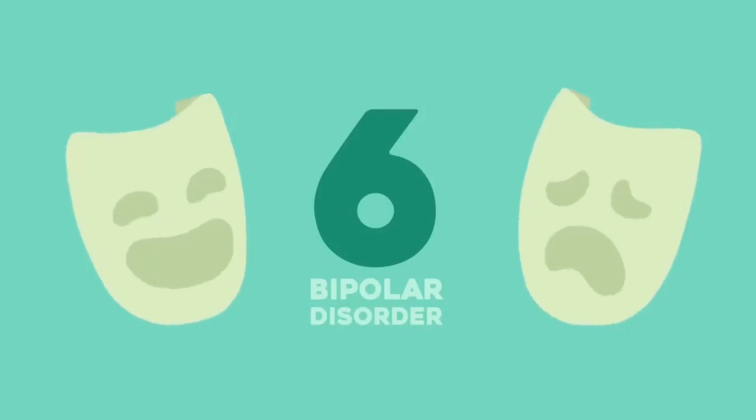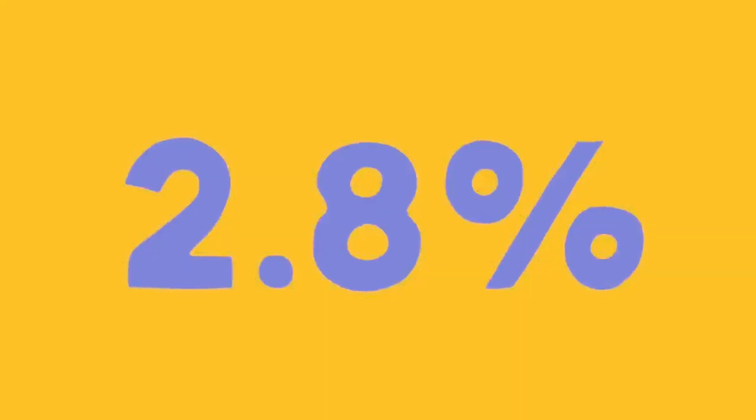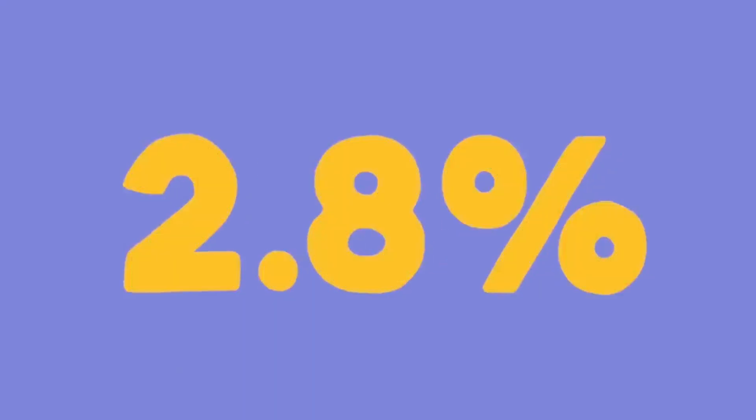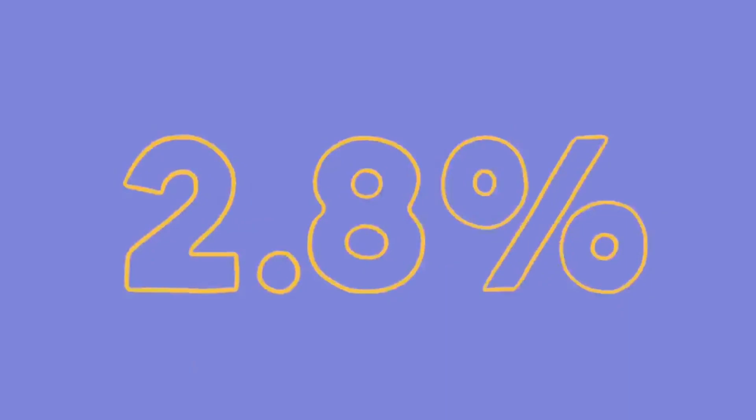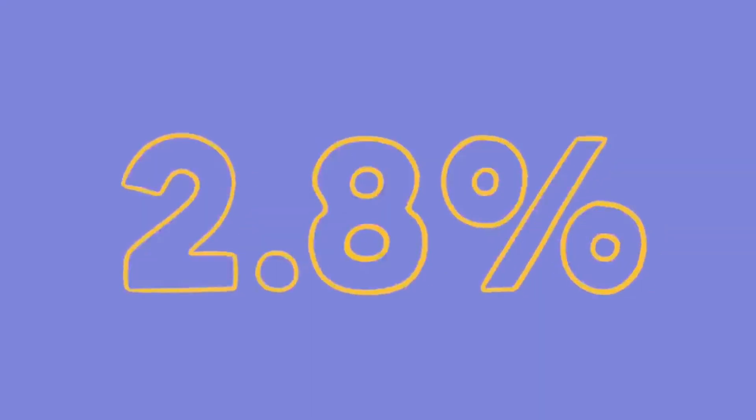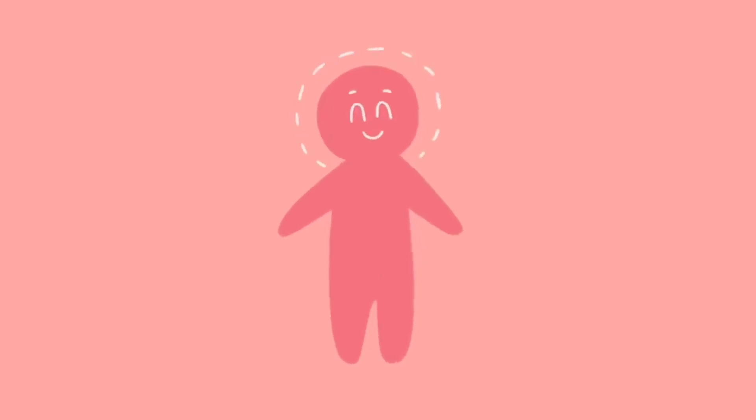6. Bipolar Disorder. An estimated 2.8% of the U.S. population that sought mental health treatment was diagnosed with some form of bipolar disorder in 2018. This number may be low, as many individuals who suffer from a mental health disorder do not seek treatment. Bipolar disorder means a lot more than just really bad mood swings. People diagnosed with it cannot completely control these mood swings, which range from manic episodes — feeling super happy or invincible, doing spontaneous things, grandiosity and racing thoughts — to extreme bouts of depression and sometimes hypomania in between. A variety of medications and counseling treatments can help.